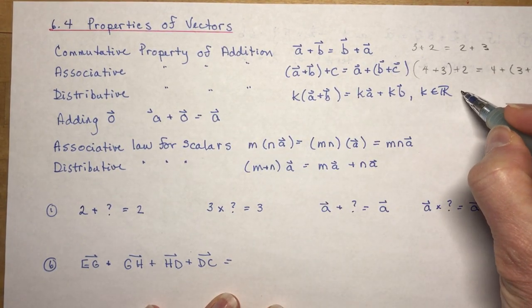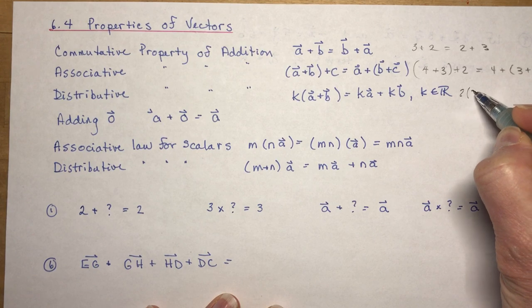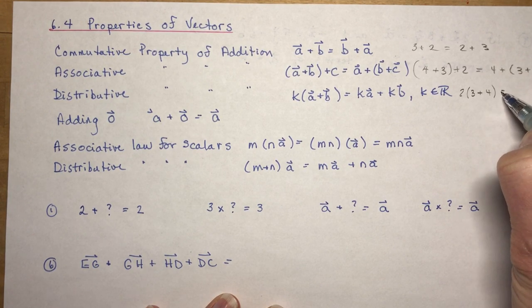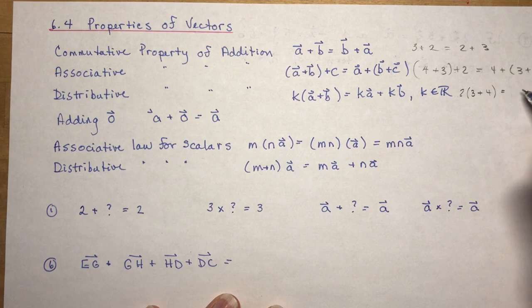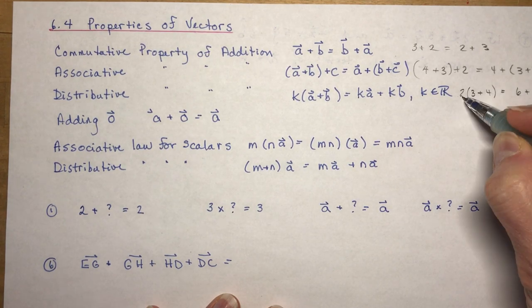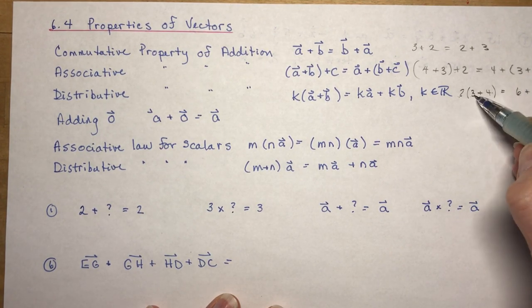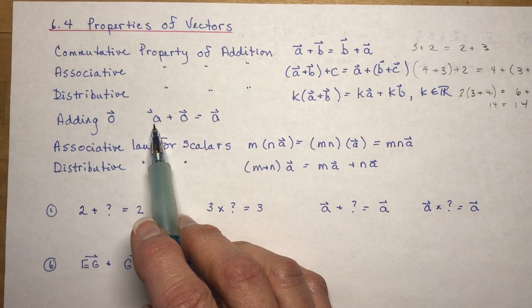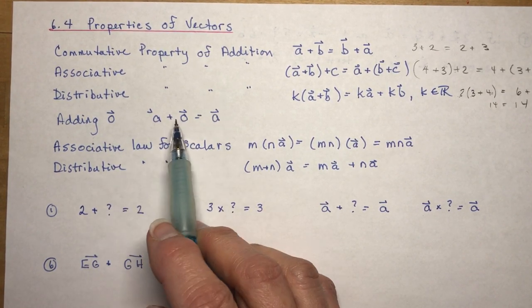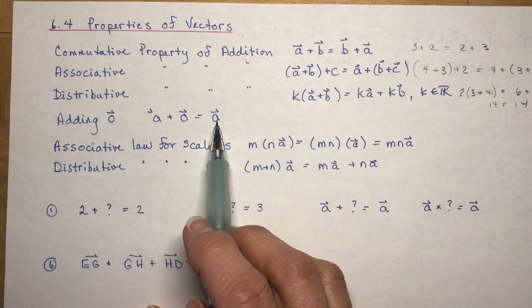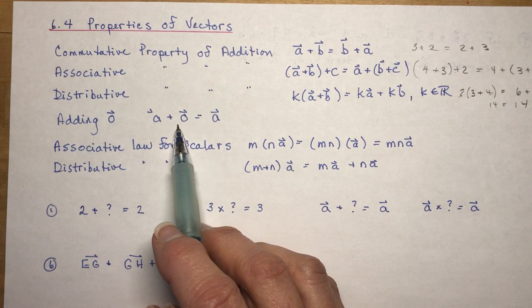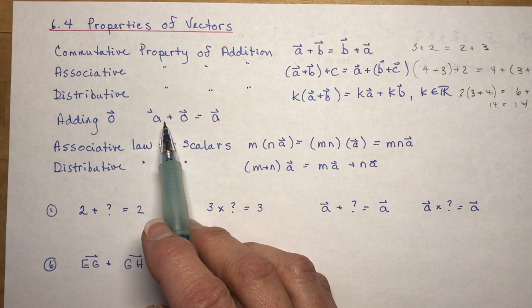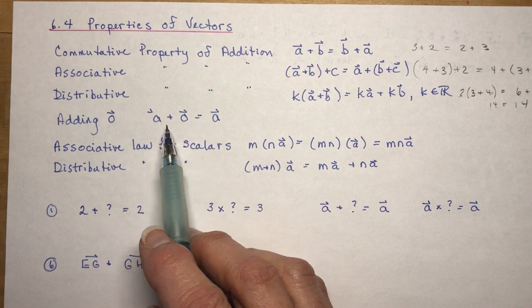You're familiar with this. If I had 2 times (3 plus 4), that's the same as 6 plus 8. You get 14 no matter which way you do it. With vectors, however, if you're adding 0, you add the 0 vector to get vector a. You have to add the 0 vector to it.